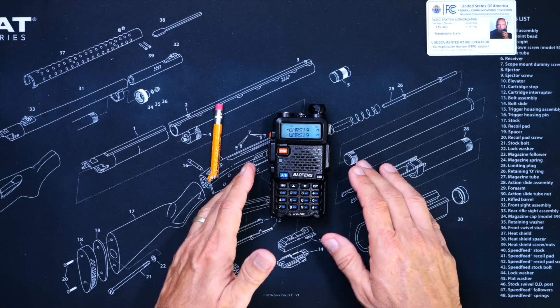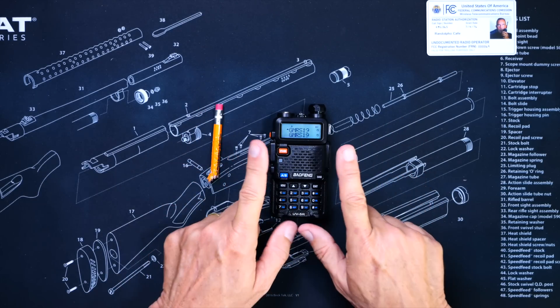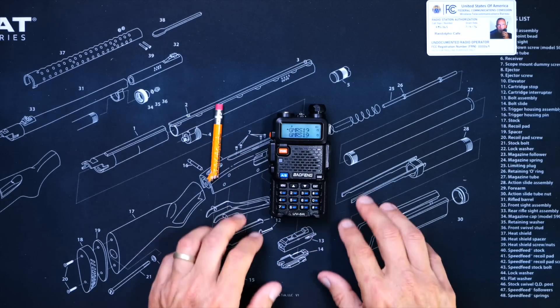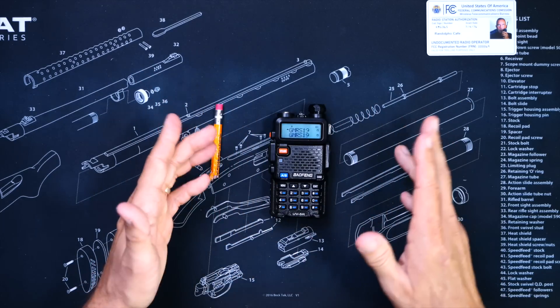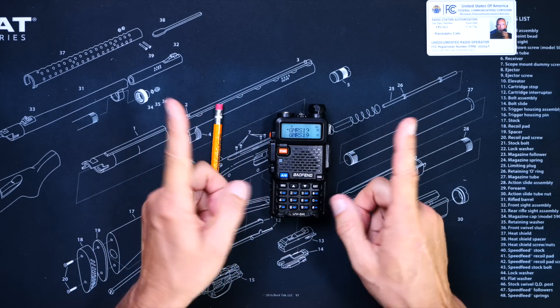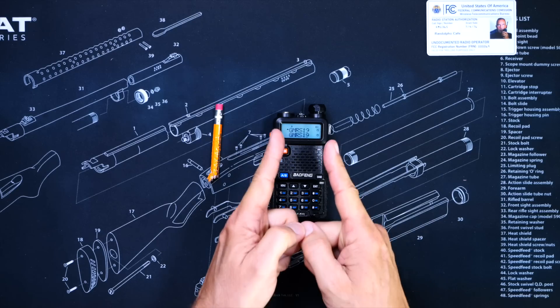Many Baofeng UV5R radios, particularly the newer ones, are locked, meaning that they can only transmit on certain frequencies. You can listen to almost any frequency, but you can only transmit on a small subset of those frequencies.